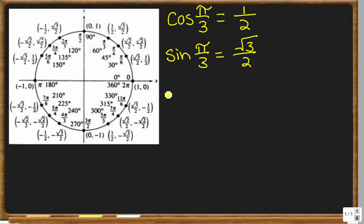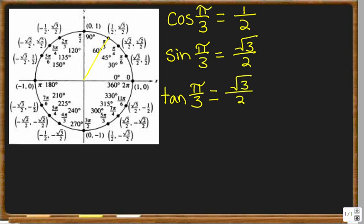For tangent, to find the tangent of pi over 3, we need to know the sine and the cosine. You go to pi over 3 on the circle, and tangent is going to be sine over cosine, or y over x. So we're going to do the square root of 3 over 2, all over 1/2. We take the numbers from the unit circle — sine on top and cosine on the bottom — and we have a fraction divided by another fraction.